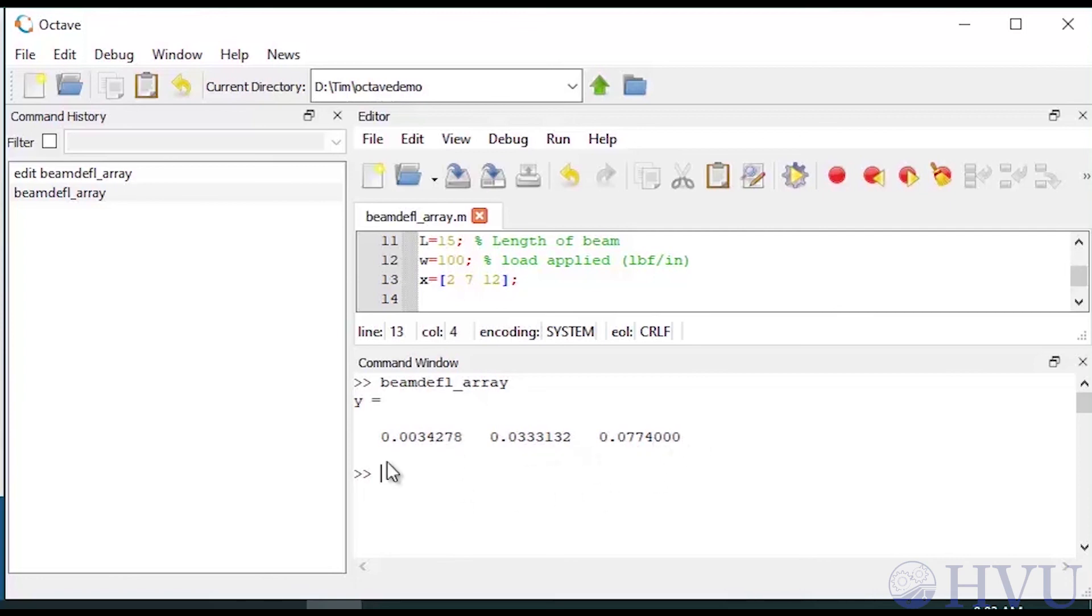The first value in the Y array corresponds to the deflection at the location specified in the first value in the X array. The second element in Y corresponds to the location in the second element in X, and so on.